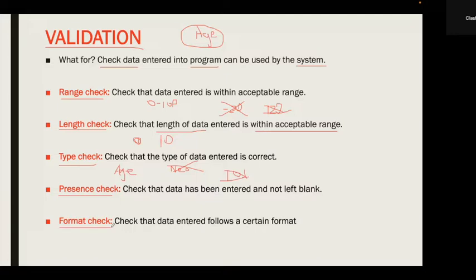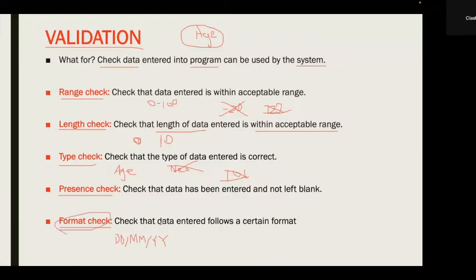The fifth validation check is the format check, which verifies that the data entered follows a specific required format. For example, when entering a date on websites or programs, they often require a specific format — first the date, then the month, then the year. A format check ensures the data entered follows exactly that format.